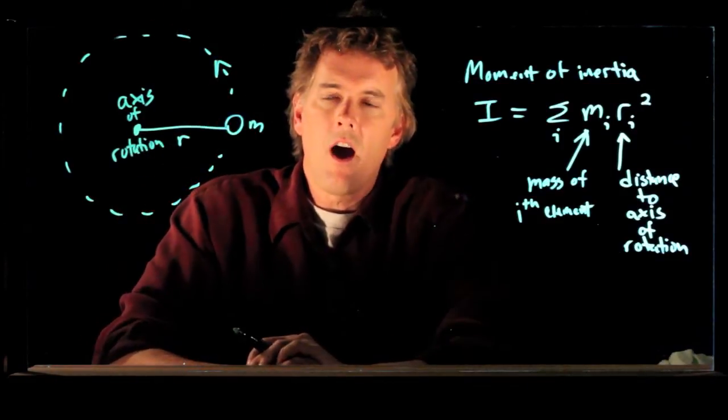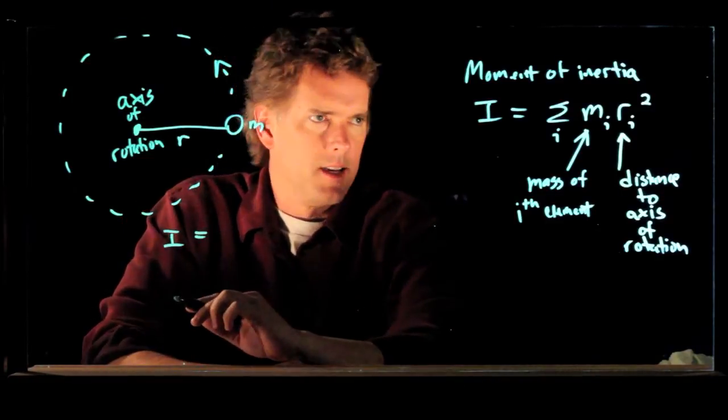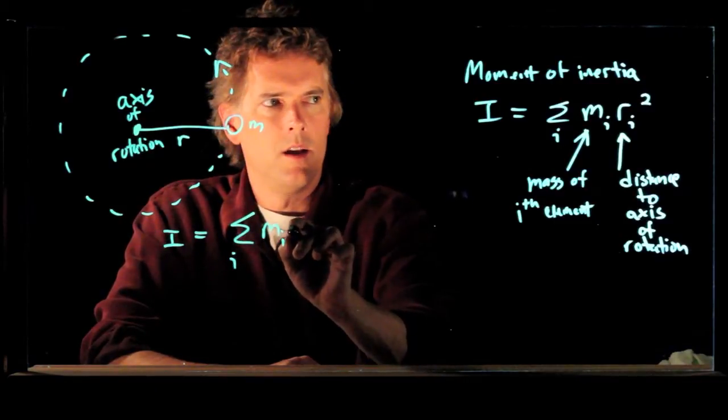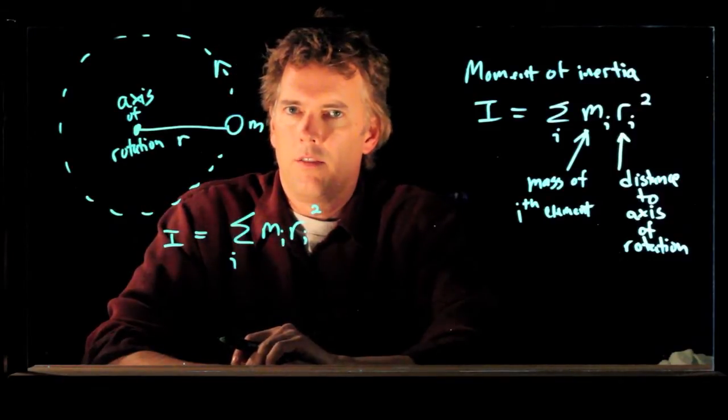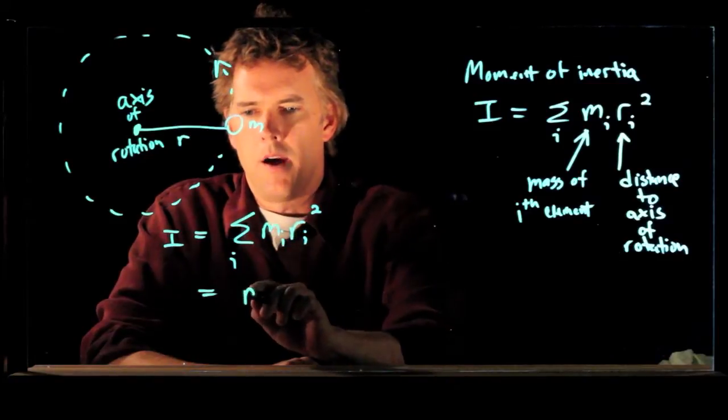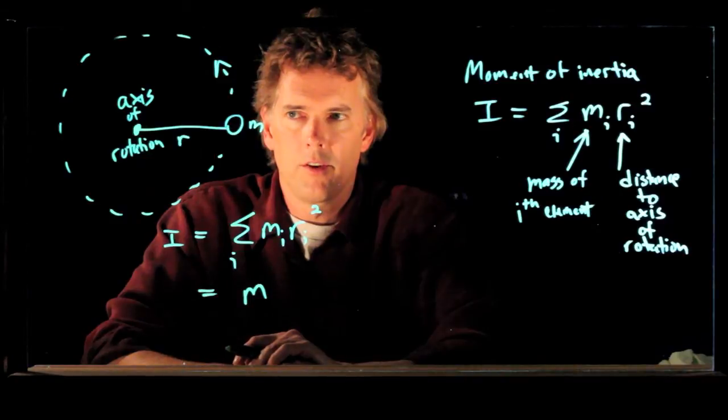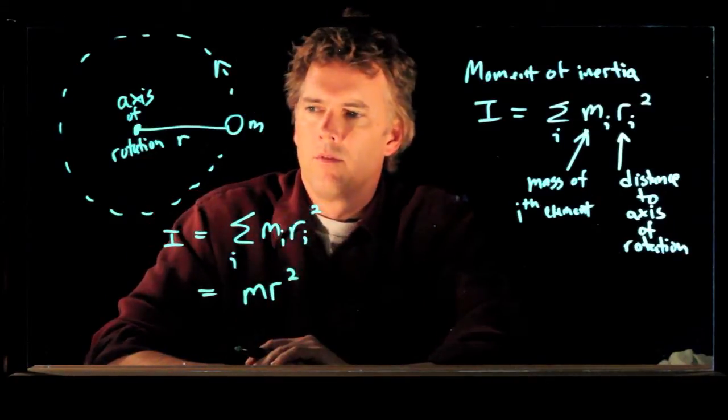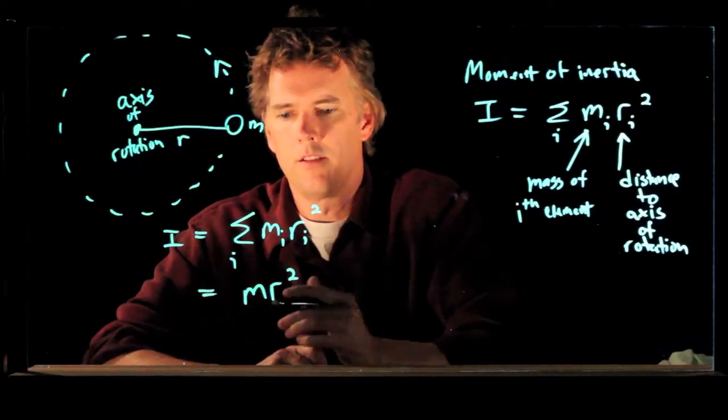Okay, so what is I for this object? I is the sum of m sub i r sub i squared. In this case, there's only one particle. It is particle m. What is the distance of that particle from the axis of rotation? It's r. So I for a single particle on a string is m r squared.